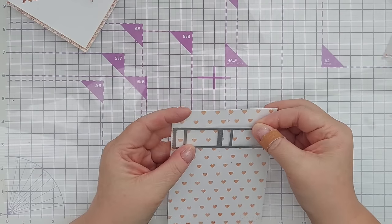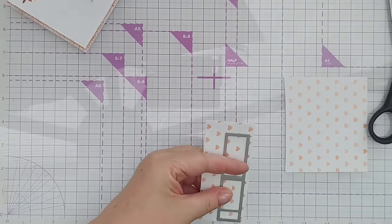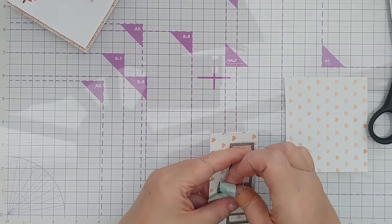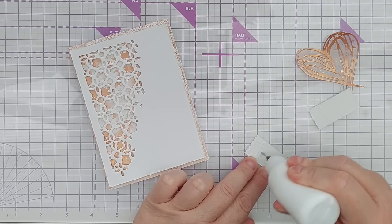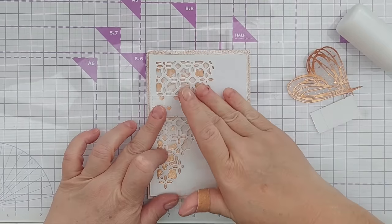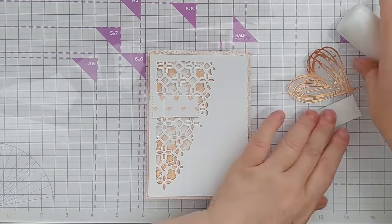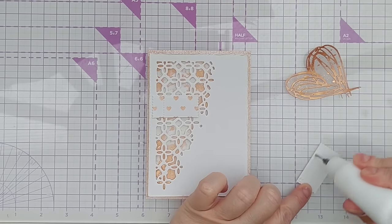To give my heart something to sit on, I took some ticket dies and die cut some tickets out of the texture paste card panel that I made, and then I glued these onto the front of my card staggering them slightly just for a bit of interest and variation. And then I used Crafter's Companion tape runner to stick the heart down on top. I use that for sticking things down that are made from vellum because it does a really good job of not showing through the vellum.